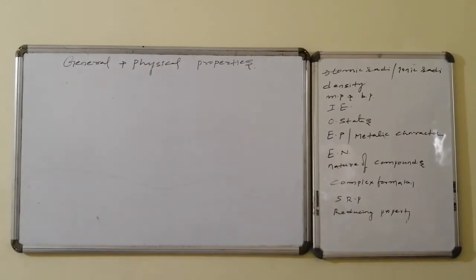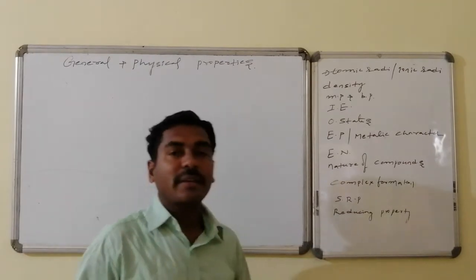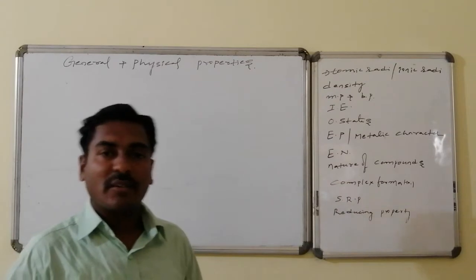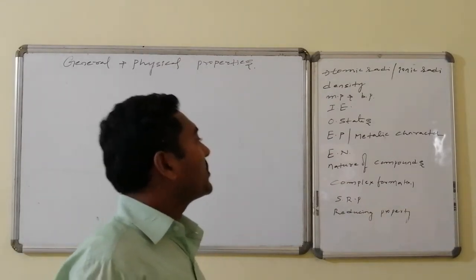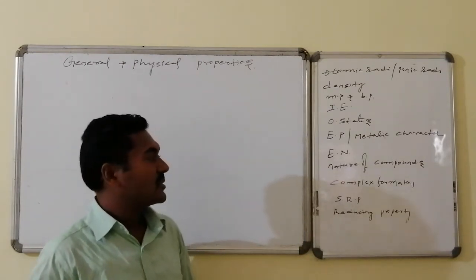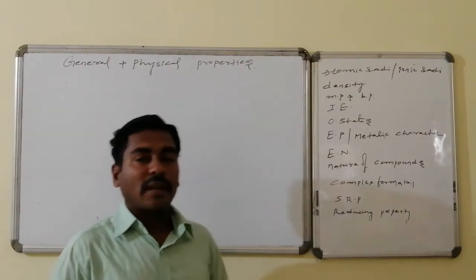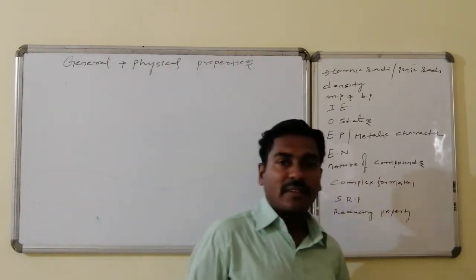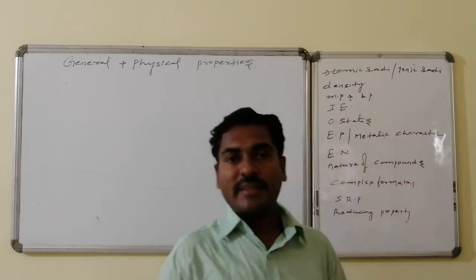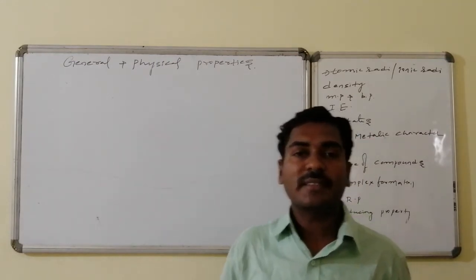Now let us discuss the general and physical properties of the Boron family, which includes atomic radii, ionic radii, density, melting point, boiling point, ionization energy, oxidation states, electropositive character, metallic character, electronegativity, nature of compounds, complex formation ability, and standard reduction potential values — covering both physical and chemical properties.